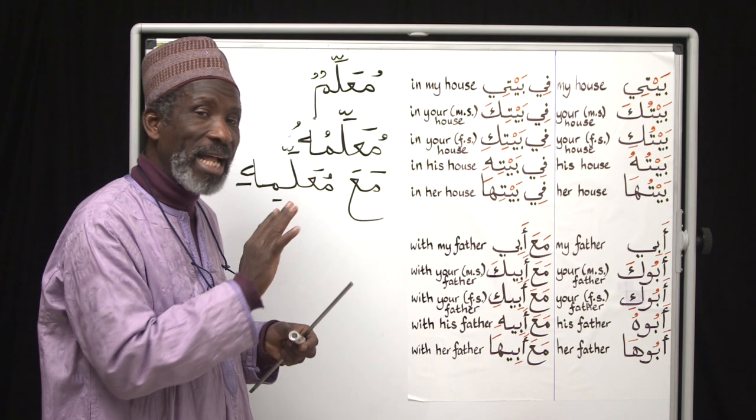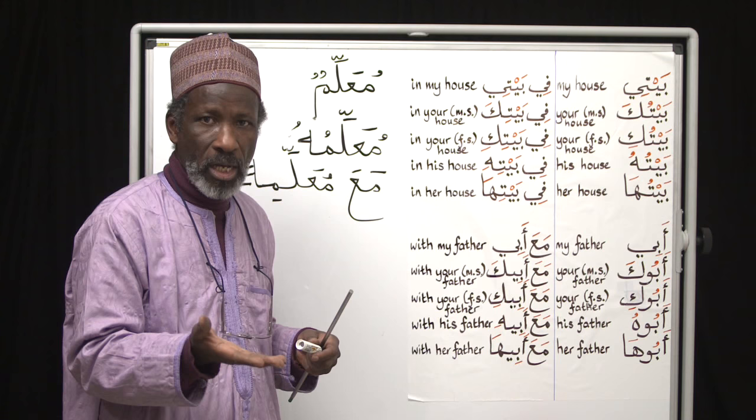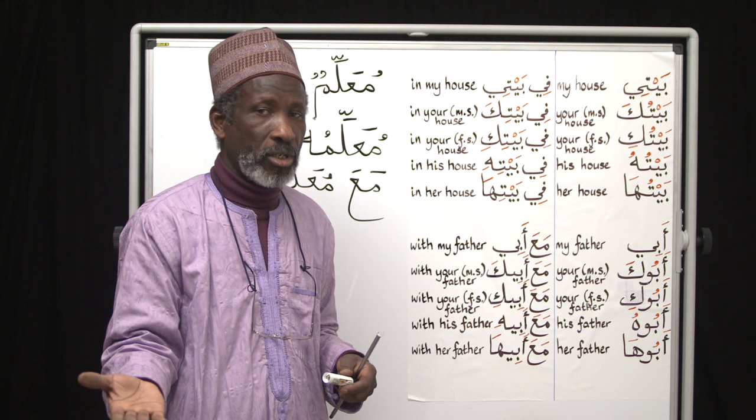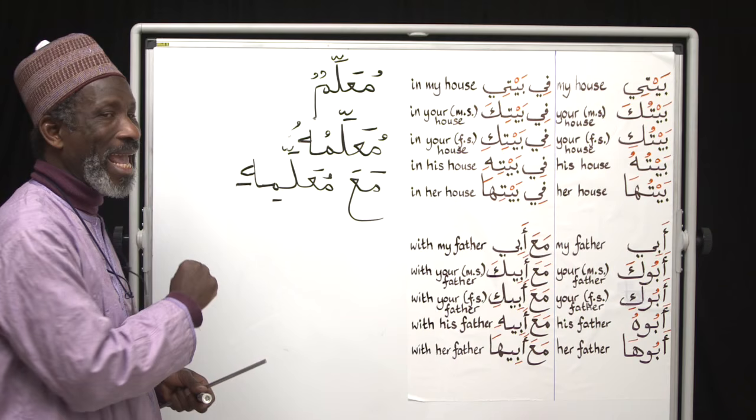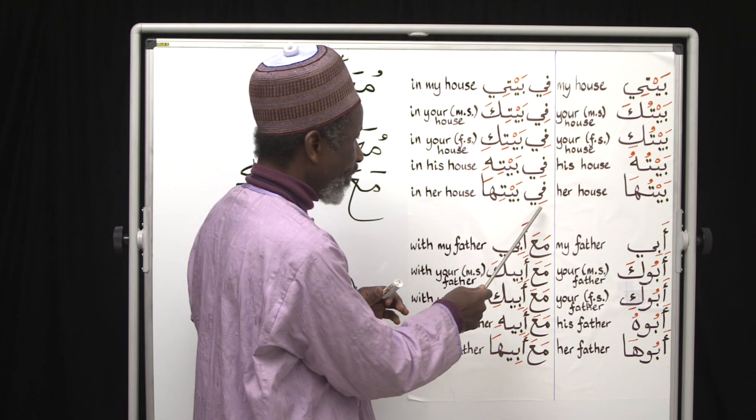All of this is explained on page 22 onwards all the way to page 27 with plenty of exercises. The rule is: originally it is 'hu', but only when you have a kasra before it — which happens when you have a preposition before that noun — the 'hu' becomes 'hi'. So hu → hi in that context.